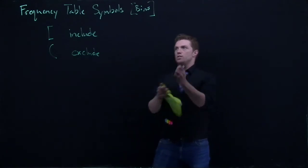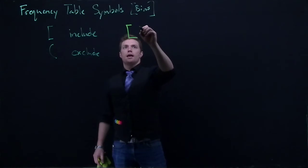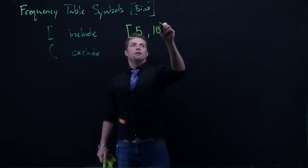So, oftentimes we would see a bin like such, where we would have something like a bracket, five, comma, ten, parentheses.